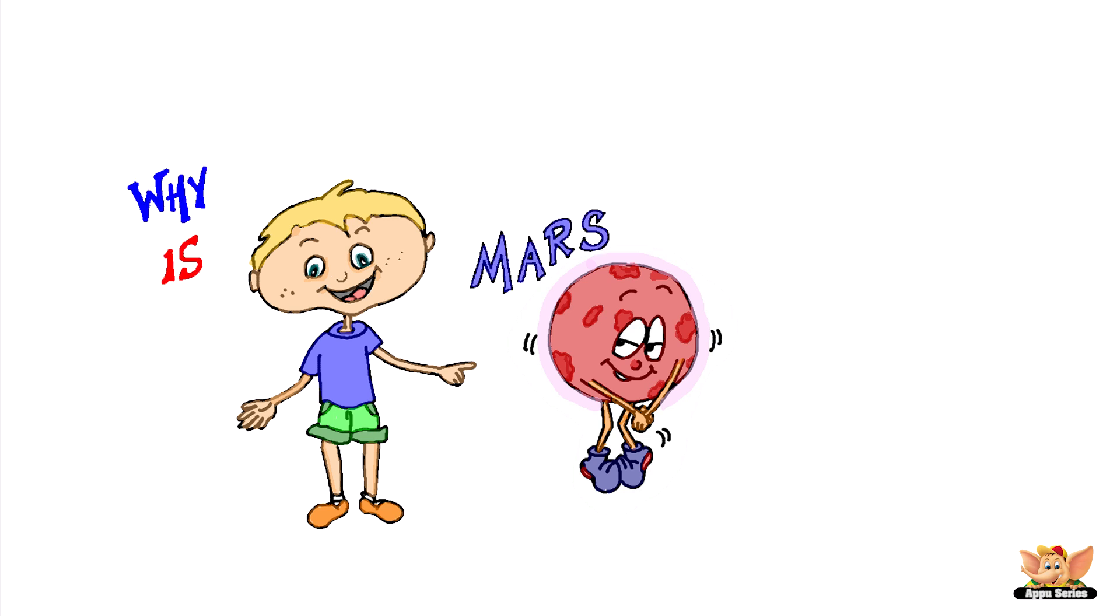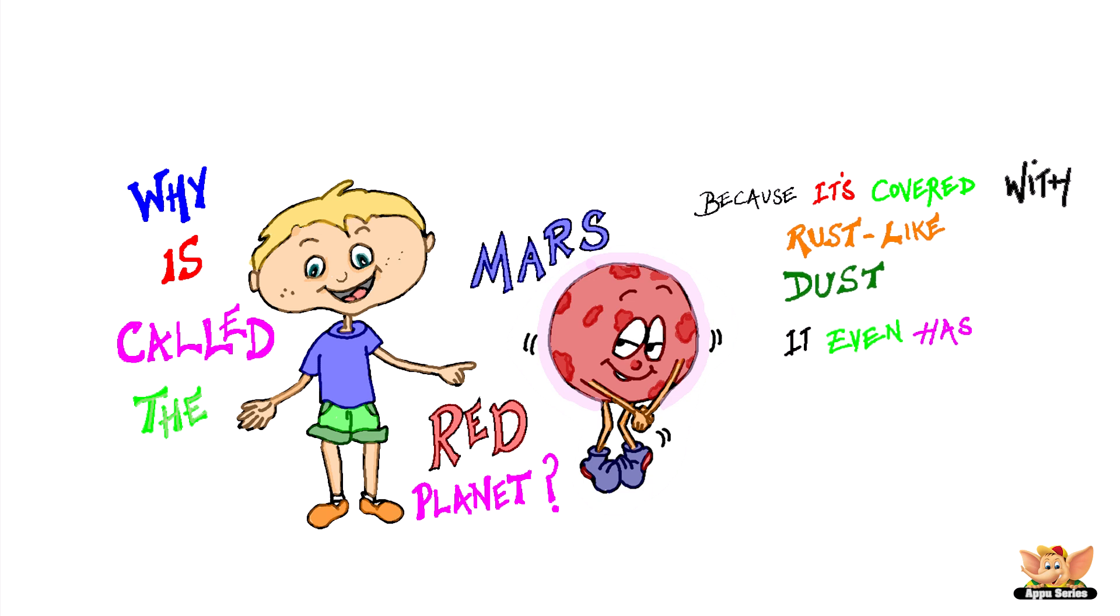Why is Mars called a red planet? Because it's covered with rust-like dust. It even has a pinkish atmosphere.